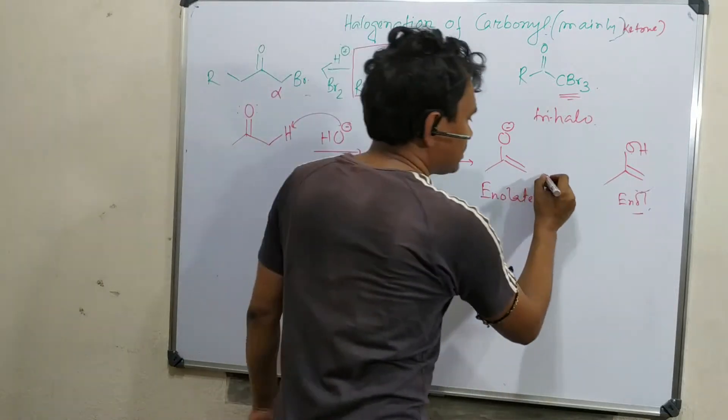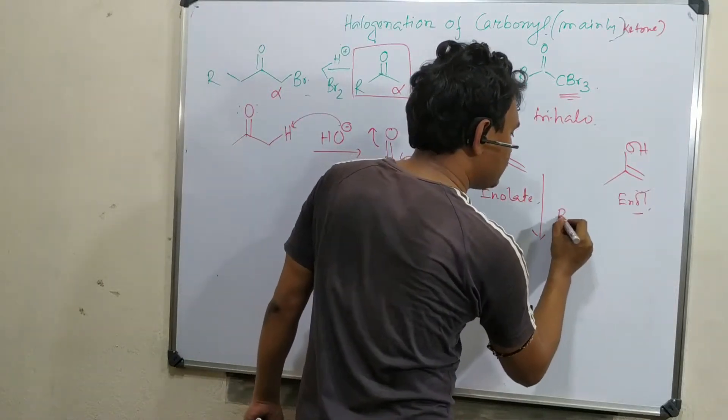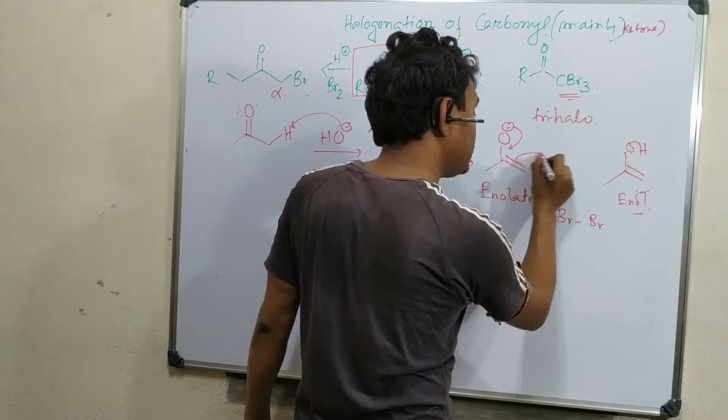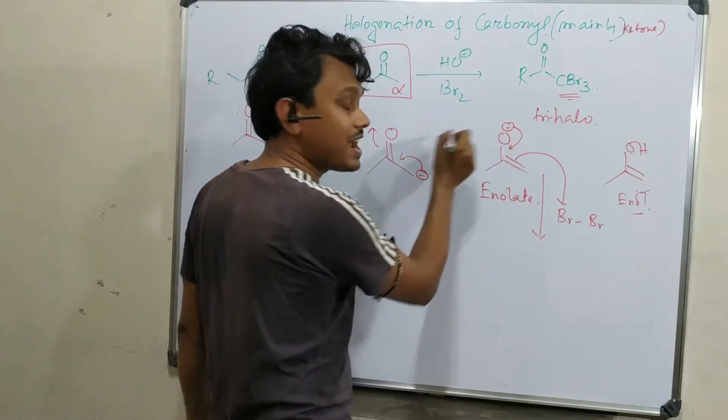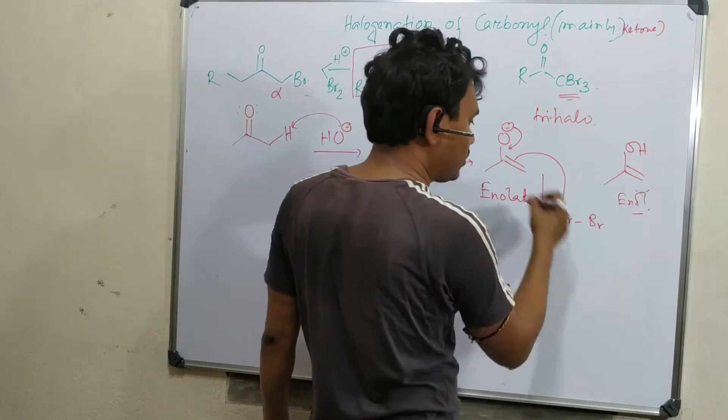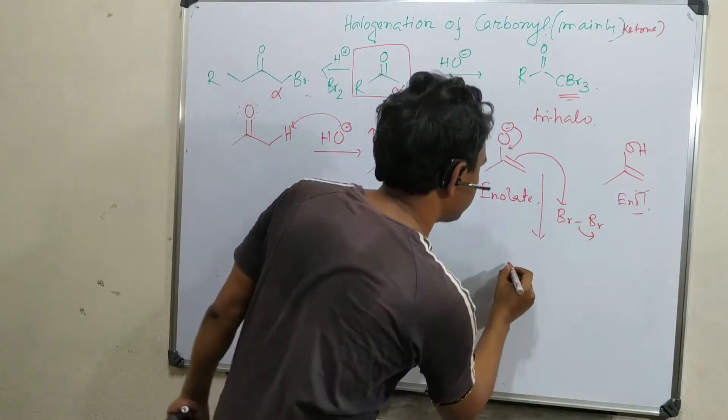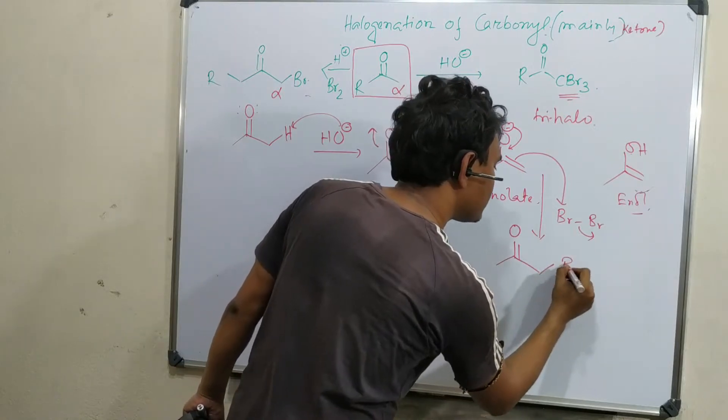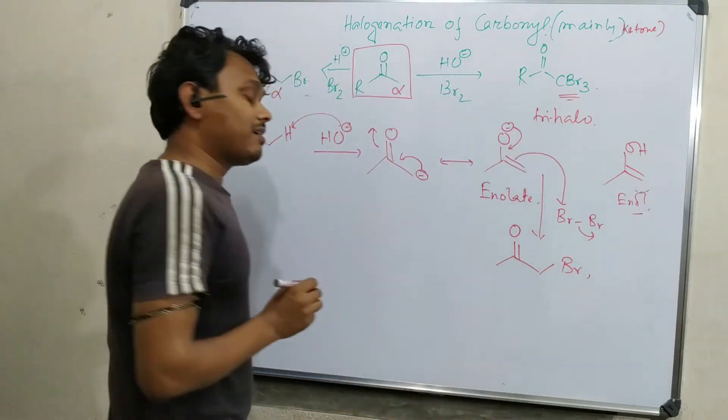This is produced and if we consider this halogen, similar, it is even more reactive. Previously there was a hydrogen attached. Right now no hydrogen is there, so more reactive. So it will react and fast produce this.